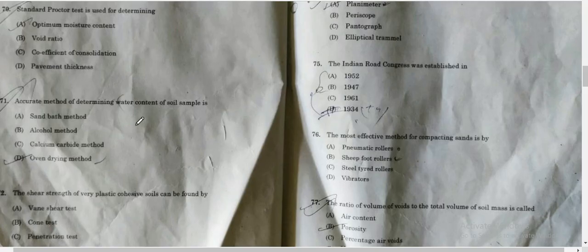Question 70 asks: what is the accurate method for determining the water content of the soil? Water content is the weight of water divided by weight of solids. How do you determine the water content of the soil? Some methods are field methods and some are laboratory methods. This includes sand bath method, alcohol method, calcium carbide method, and oven drying method. The correct answer is oven drying method.